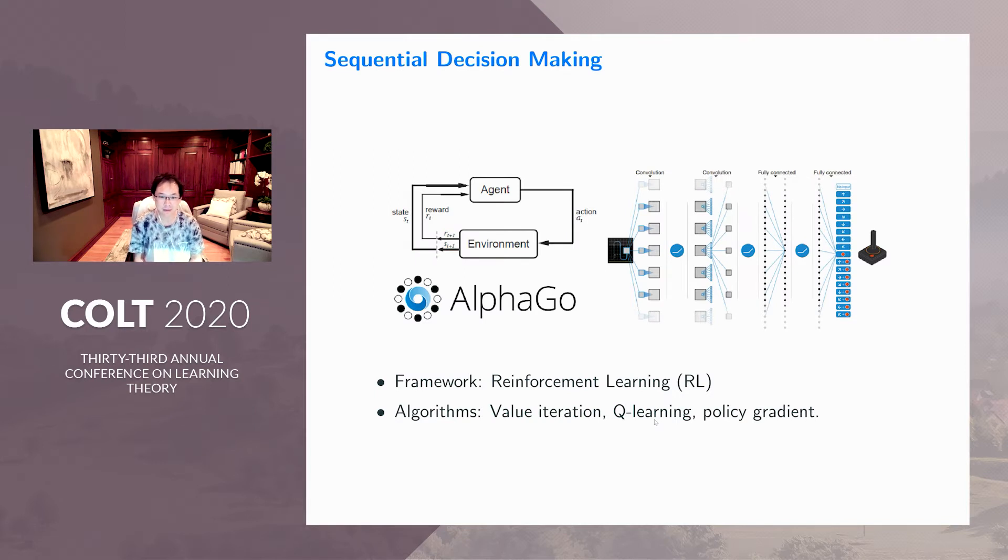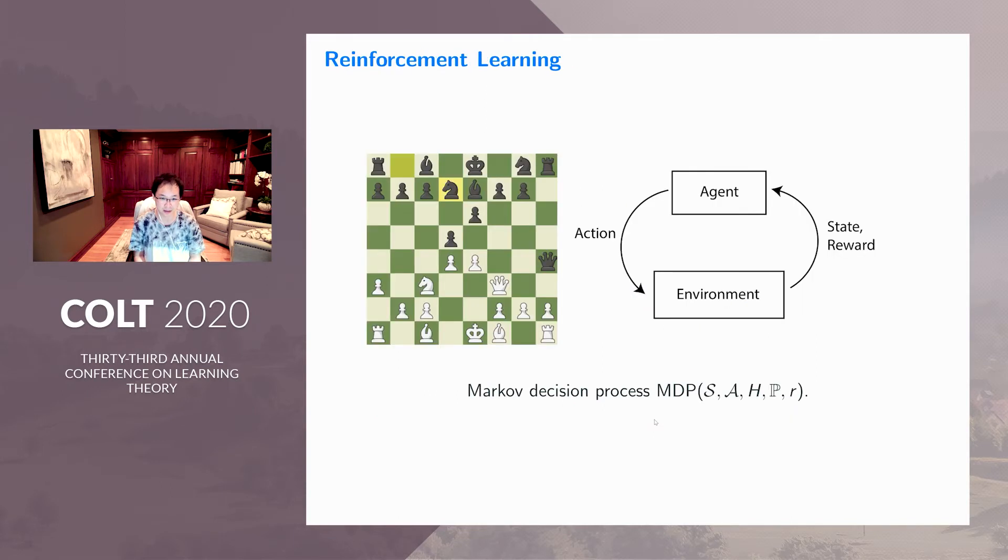In real life, we typically face a class of problems called sequential decision making, where you need to make a lot of decisions in a sequence. It can be when you're doing robotics tasks or trying to play games. A typical framework for solving those problems is reinforcement learning, and there are classical algorithms like value iteration, Q-learning, and policy gradient. Reinforcement learning is a framework where agents and environment interact sequentially. In theory, we study the model called Markov Decision Process, which has states, actions, horizon, transition probability, and rewards.